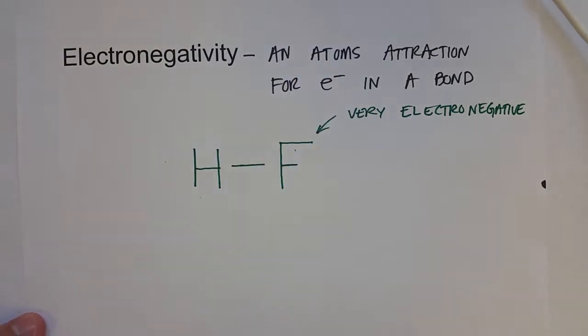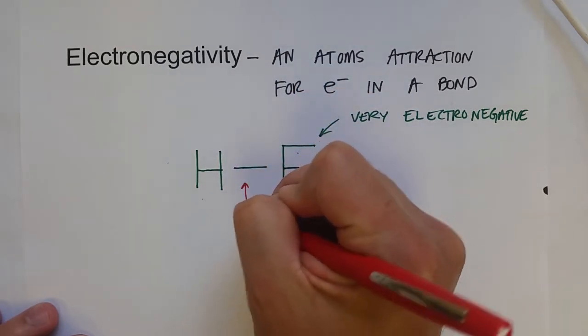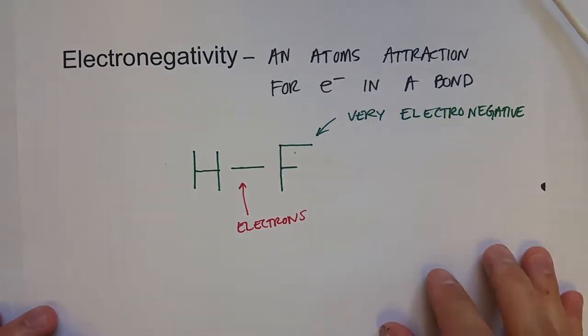It's sort of in the middle, not very electronegative, sort of average. And so what this means is that electrons in the bond are attracted to fluorine more than hydrogen.